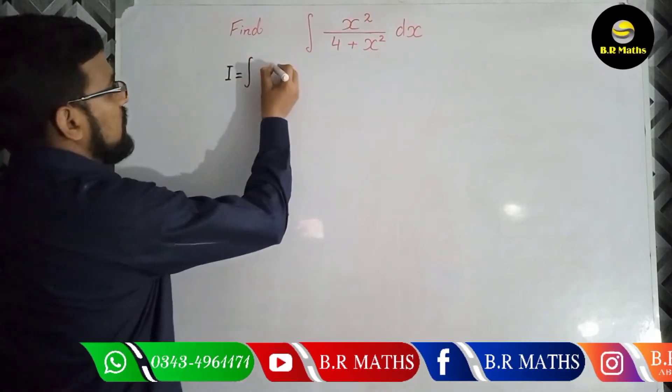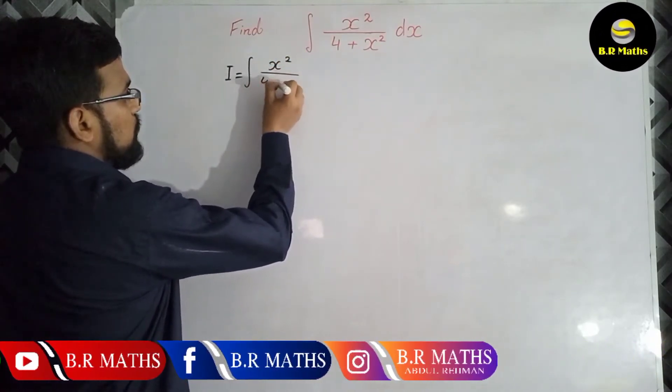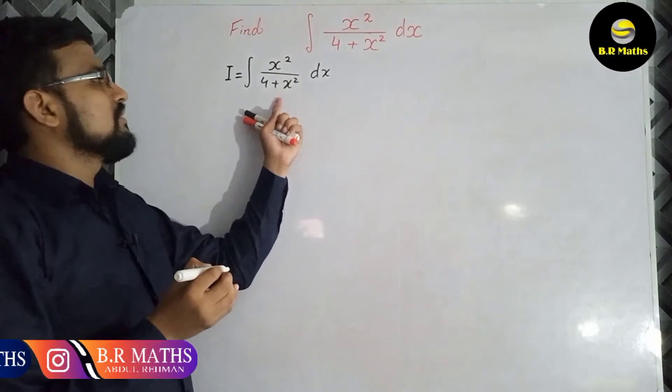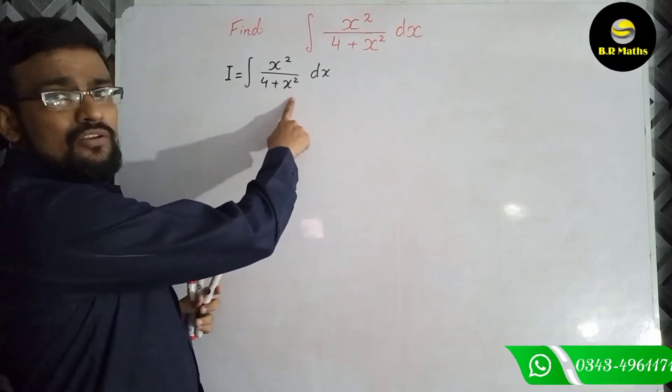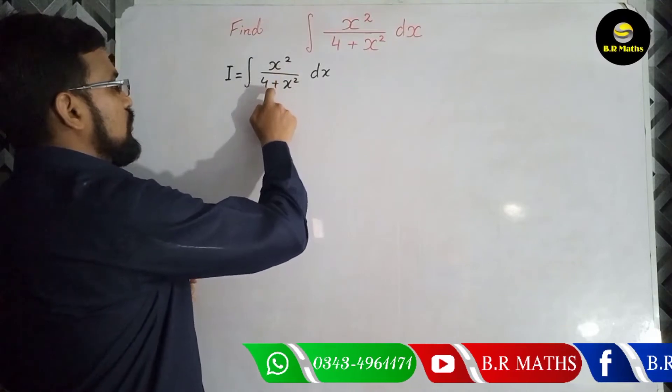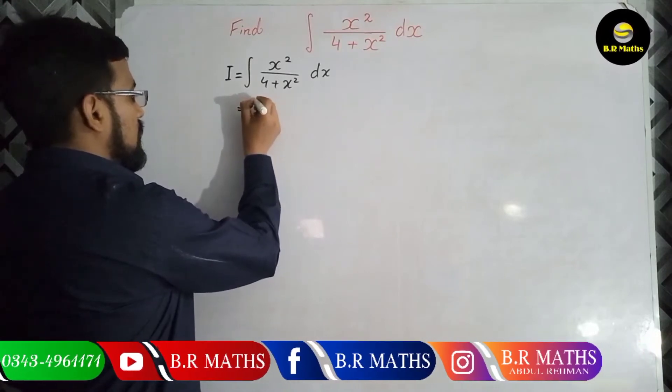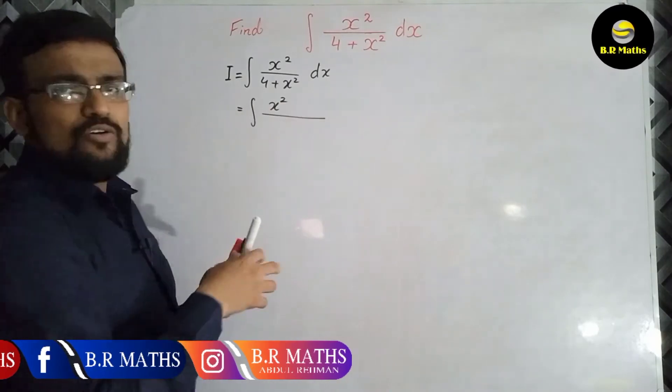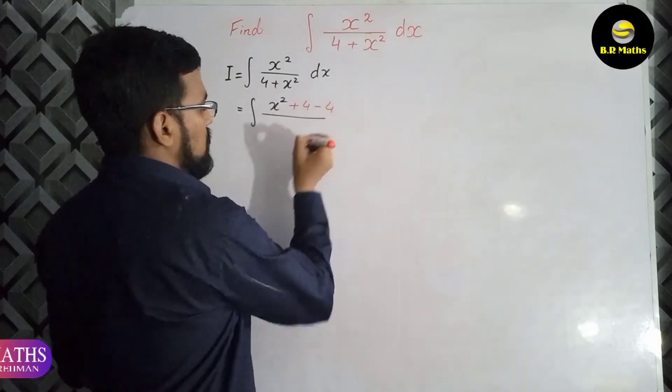Firstly, integrate x square over 4 plus x square dx. So x square over 4 plus x square. In the denominator, 4 plus x square, we'll change the numerator by cancellation. In the numerator, x square, add or subtract 4 plus 4 minus 4.